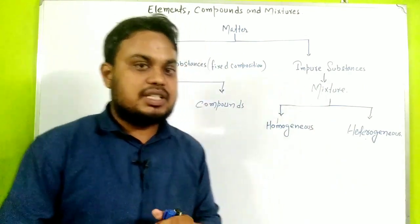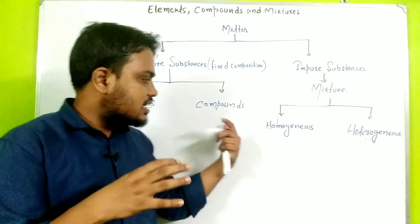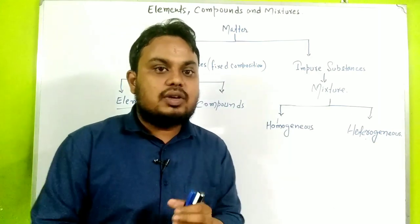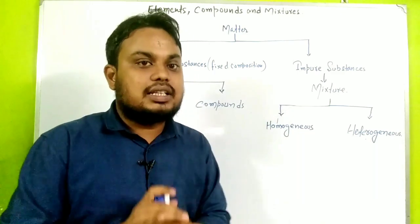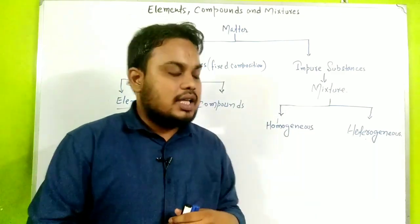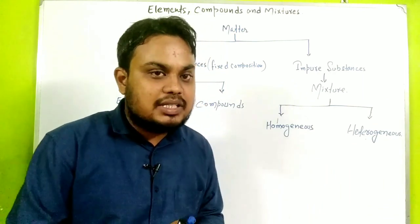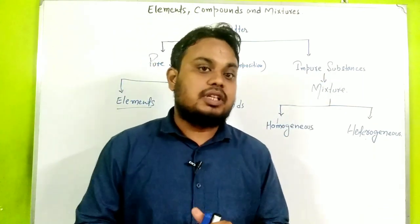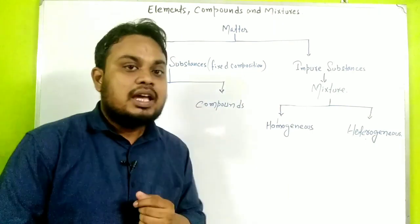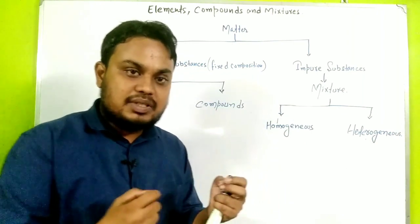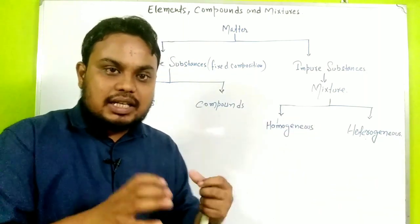Pure substance means the atoms are combined in a fixed ratio — it can be an element or a compound. Pure substance can be further classified into elements and compounds. When similar atoms are combined, it forms an element, and when different atoms are combined, the resulting molecule is a compound.